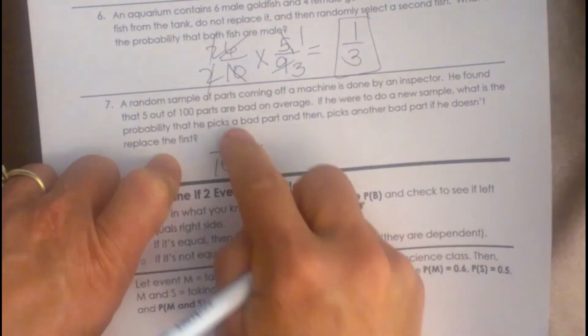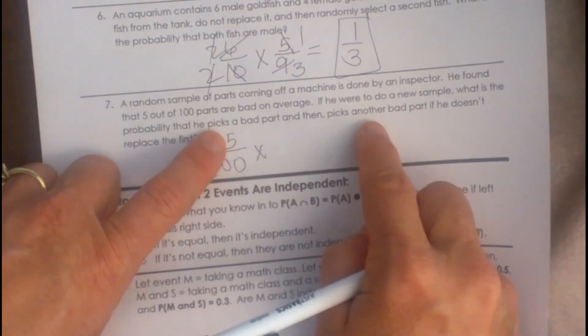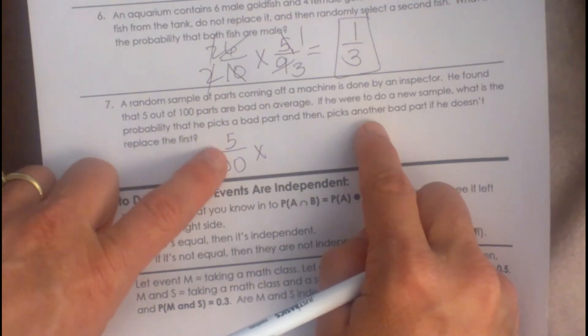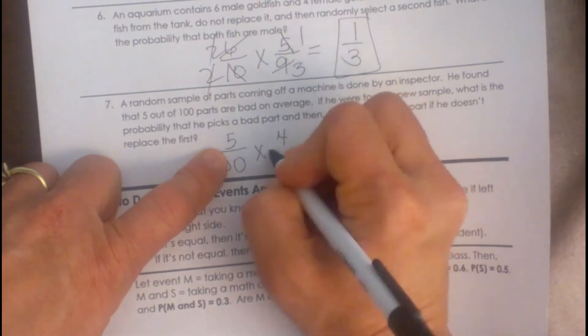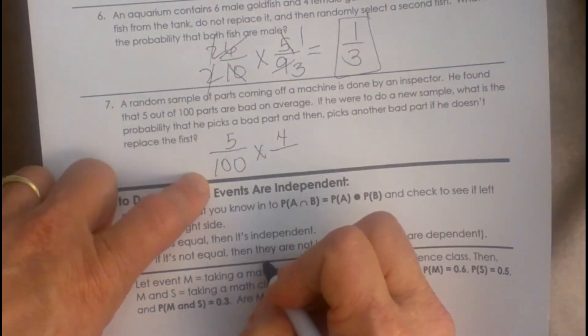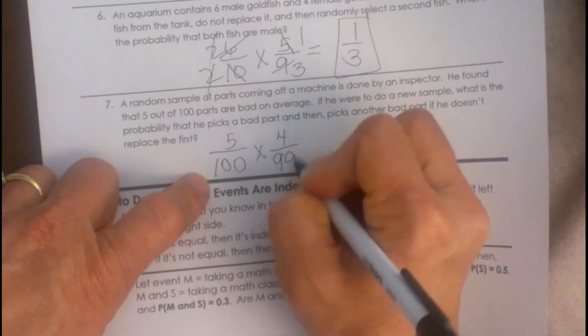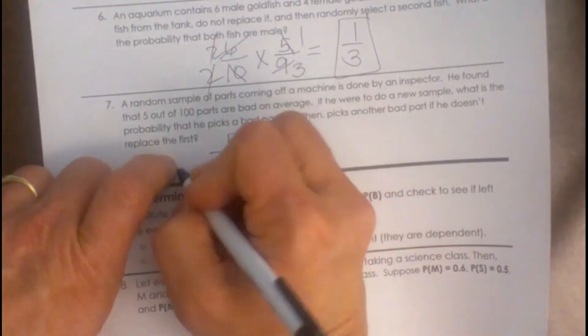And then the second one, let's see, he chose if he picks a bad part and he doesn't put it back, so we are assuming he picked a bad part, so that means there are 4 bad parts left out of 99. So let's reduce these: 1 25th and then 1 fifth.